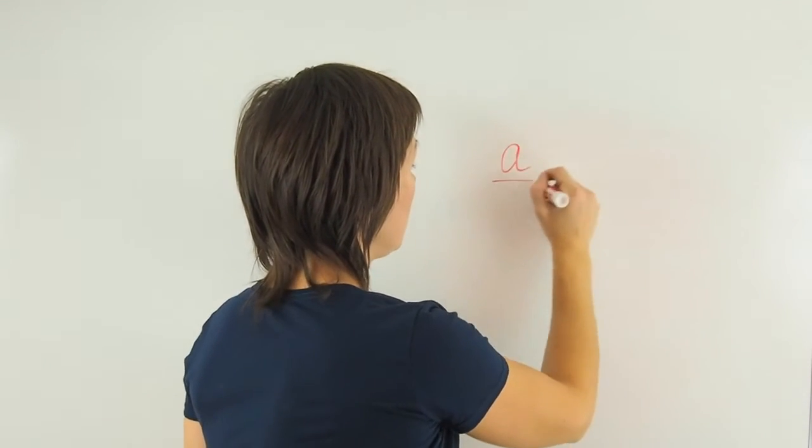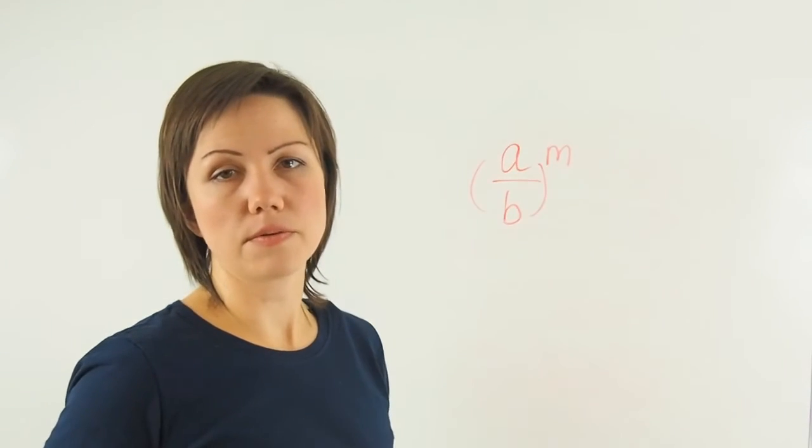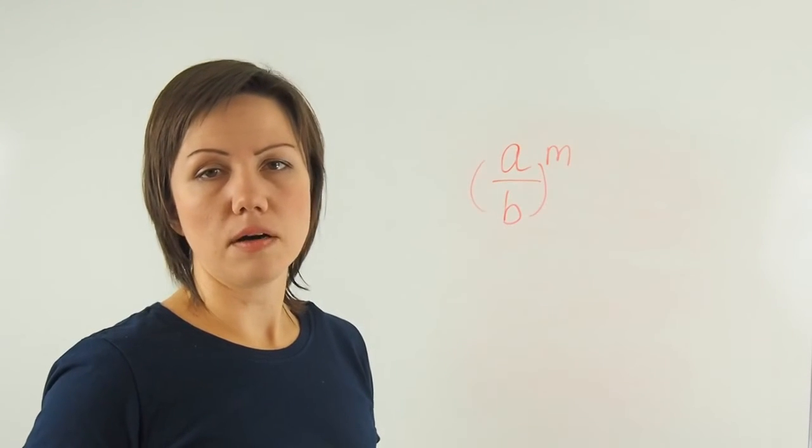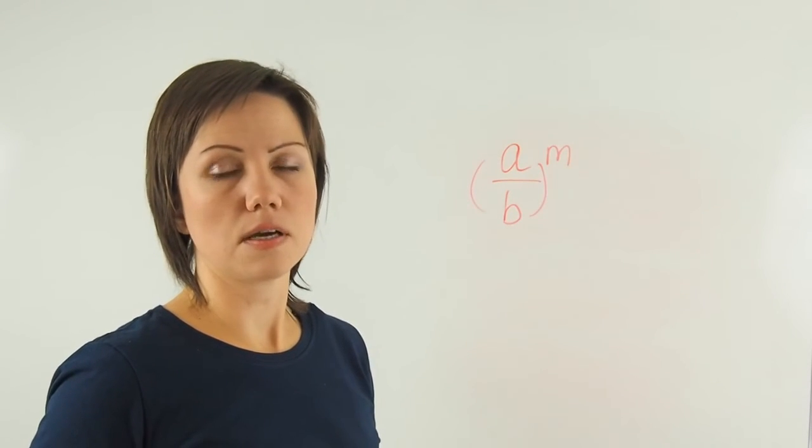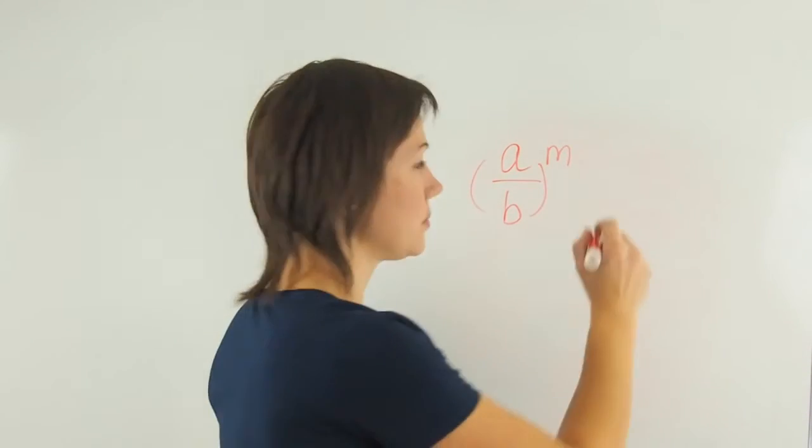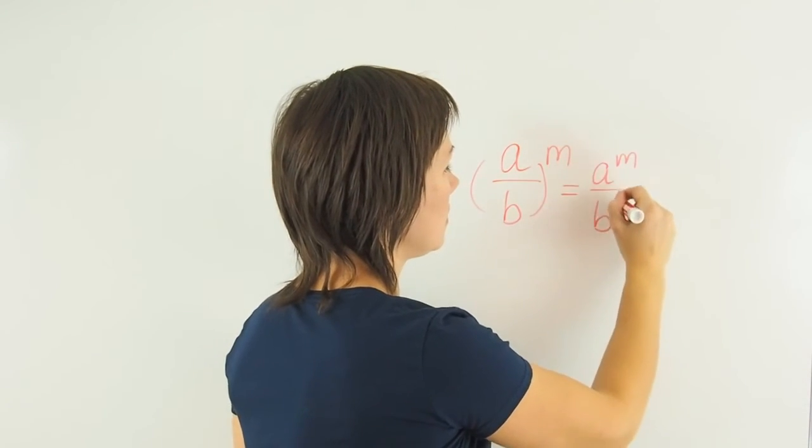One more important law to remember is this one. When your base is a fraction and it's raised to the exponent m, then it means that every part of the fraction needs to be raised to that exponent separately, the numerator and the denominator. So that equals a to the m, b to the m.